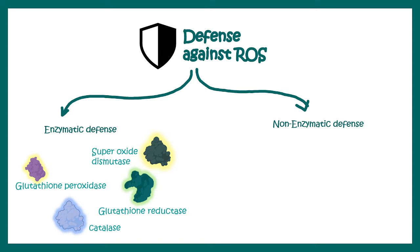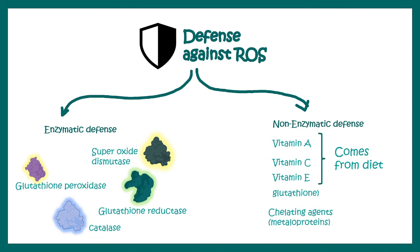In the enzymatic defense system, there are a number of enzymes which combat ROS. In the non-enzymatic defense system, there are several vitamins which are really good antioxidants that we can obtain via our diet. Other than that, there is glutathione, and chelating agents like metal-binding proteins, which can also combat ROS and prevent its harmful effects.